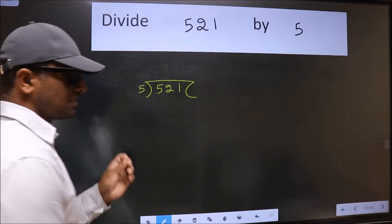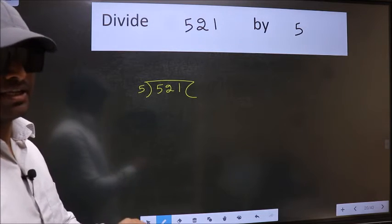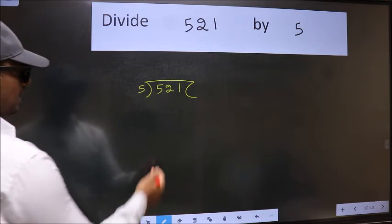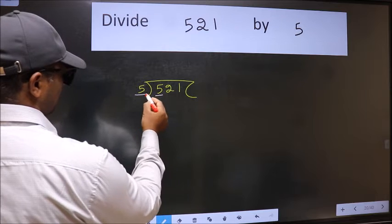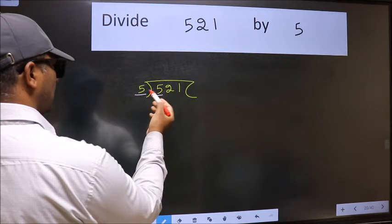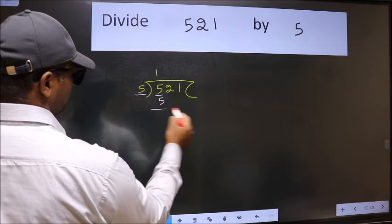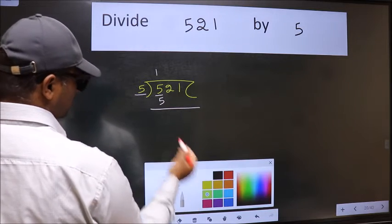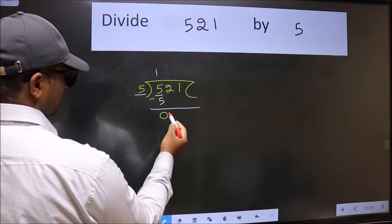This is your step 1. Next, here we have 5 and here also 5. When do we get 5 in the 5 table? 5 once 5. Now we should subtract. We get 0.